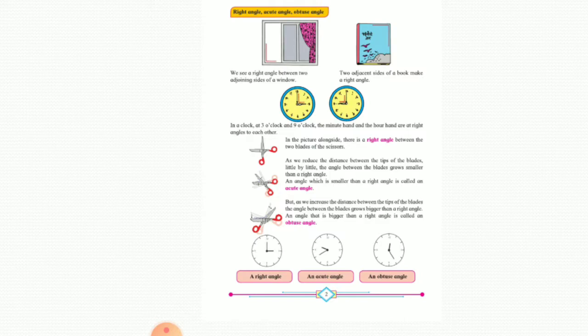Then acute angle, which is smaller than right angle, less than 90 degrees. And the last picture of the scissor is showing an angle which is known as obtuse angle, and it is more than 90 degrees and bigger than right angle.